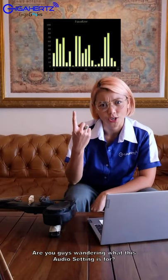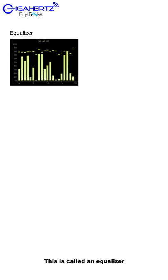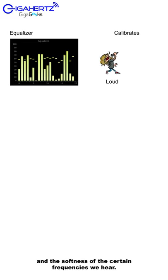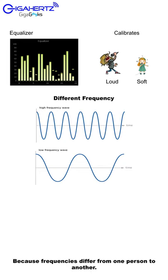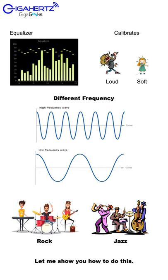Are you guys wondering what this audio setting is for? This is called an equalizer. This is where we calibrate the loudness and the softness of certain frequencies we hear. Why would we adjust these? Because frequencies differ from one person to another. Let me show you how to do this.